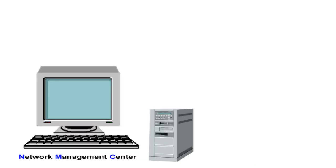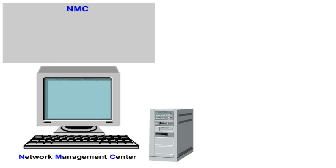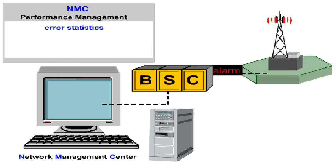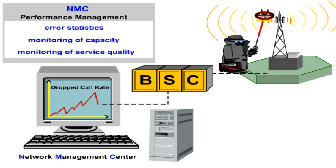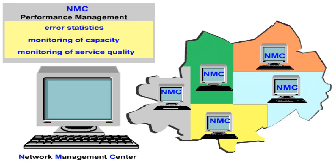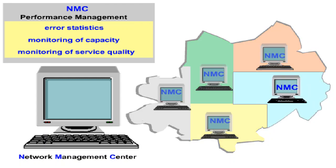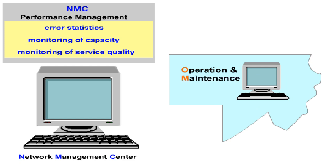The Network Management Centre, NMC, assumes special functions in the context of OMS which are not defined in the GSM standard, but are based on definitions of the International Standardisation Organisation, ISO, and recommendations of the International Telecommunication Union, ITU. An NMC carries out functions of performance management: alarms and fault elimination times are evaluated statistically, capacity bottlenecks in the network are detected, and service quality is monitored, for example, the dropped call rate in percent. Depending on the network operator, the NMC functions are carried out in a centralized or decentralized way. All NMC and OMC of a defined geographical area form the third subsystem, the operation and maintenance subsystem, or OMS.